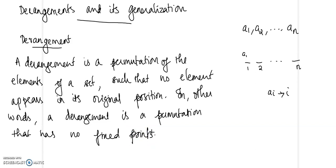Now we will look at how to find the number of permutations of n objects such that there are exactly k fixed points. We want to find how many such permutations exist given that there are k fixed points. We will use the Generalized Principle of Inclusion and Exclusion for that. Before moving into the theorem, let us introduce some additional notation.